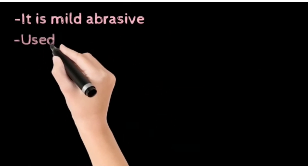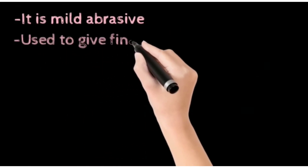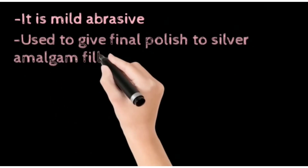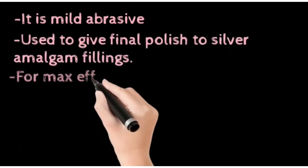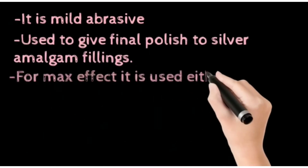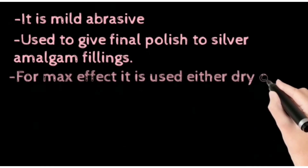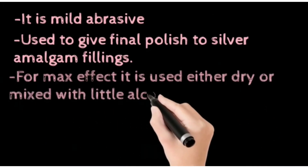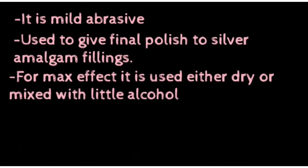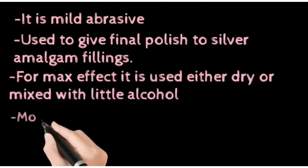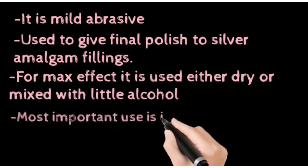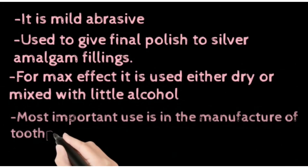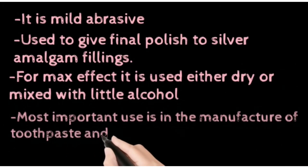Precipitated calcium carbonate is used to give final polishing to silver amalgam fillings, and is used either dry or mixed with a little alcohol for maximum effect. Most importantly, it is used in the manufacture of toothpaste and tooth powders.